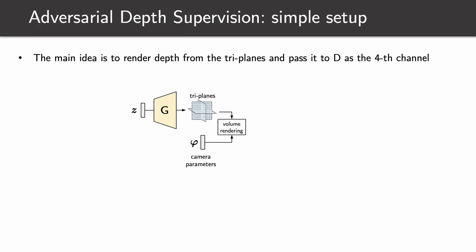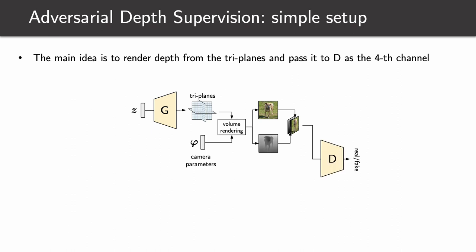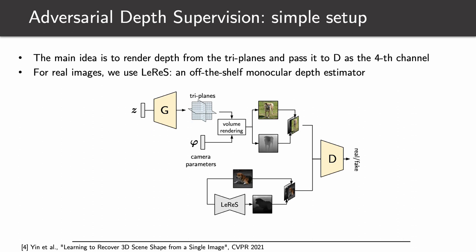The key ingredient of our work is adversarial depth supervision. The main idea is to render from the triplanes not only the RGB colors, but also the depth maps. Note that rendering depth maps adds almost zero computational overhead. RGB and depth are then concatenated to form a four-channel input and passed to the discriminator. For the real images, we use LeReS, a powerful off-the-shelf monocular depth estimator. We estimate the depth maps for real images at the pre-processing stage before training starts, so using a powerful depth estimator adds zero overhead during training.